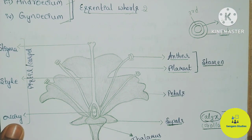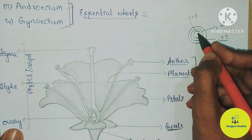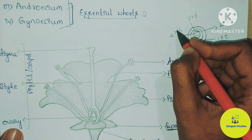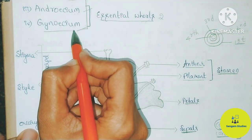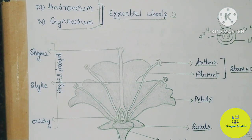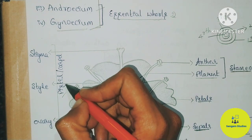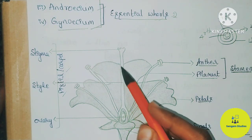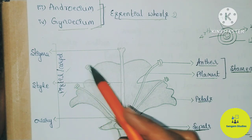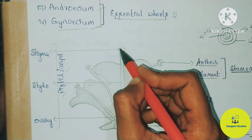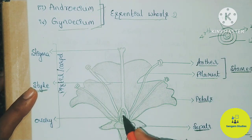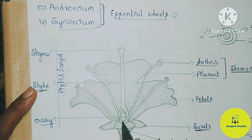The innermost whorl is Gynoecium, which is the fourth whorl and the female reproductive part of the flower. The individual unit is called the Pistil or Carpel. It consists of the Stigma at the top, then the tube-like structure called the Style, and at the base is the oval-shaped Ovary.